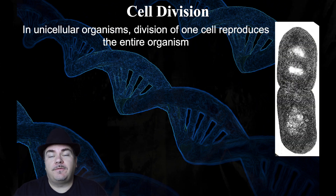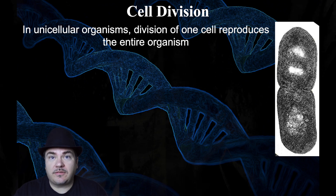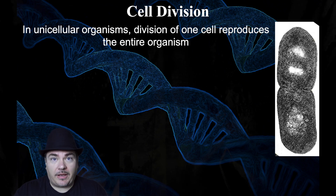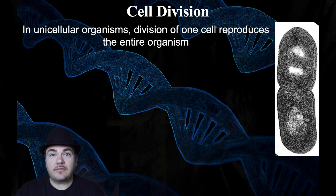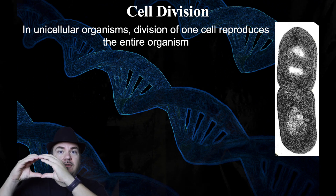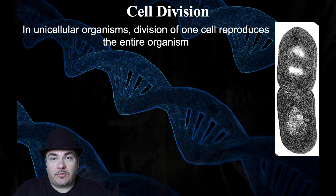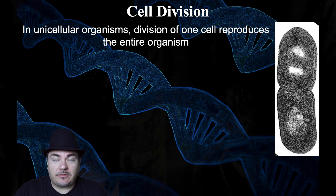For example, if you're a unicellular organism, that means one individual organism is only one cell big — for example, a bacteria, which is a prokaryote, or a yeast cell, which is a eukaryote. So if that bacteria, that one cell, starts to divide and become two cells, it's just become two bacteria. So what unicellular organisms use cell division for is reproduction — you now have two bacteria instead of one.